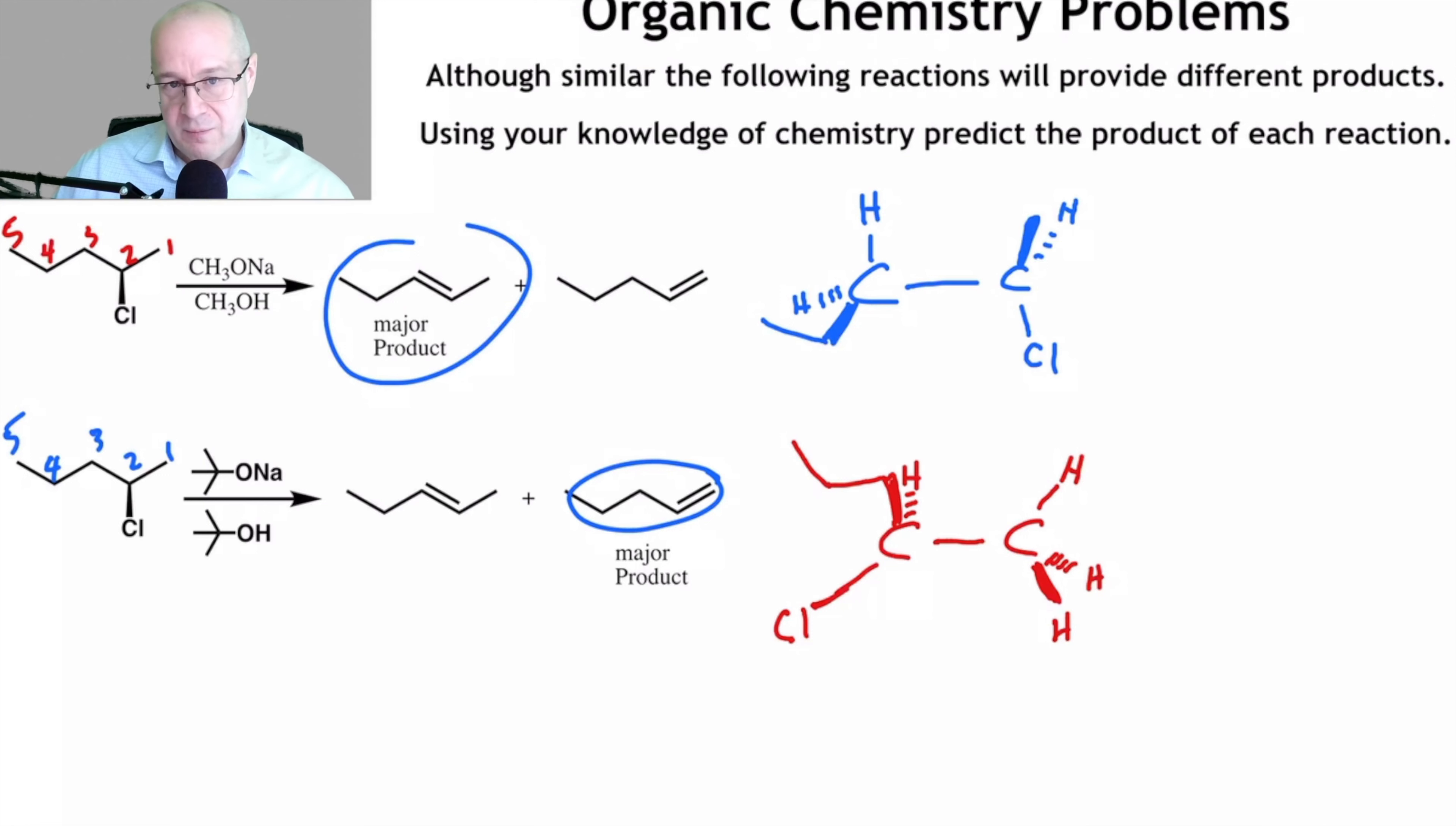Now, the anti-coplanar really isn't all that important for this question, but it is good to remember that E2 must be anti-coplanar. So I'm setting them up just to hammer that home that you've got to set up these transition states or you got to set up for the right orientation to achieve the transition state. What I'm trying to get to here, though, is a big bulky base versus a small base.